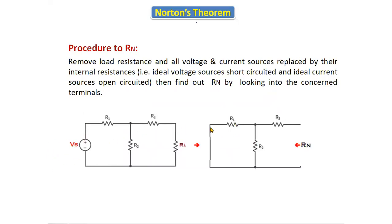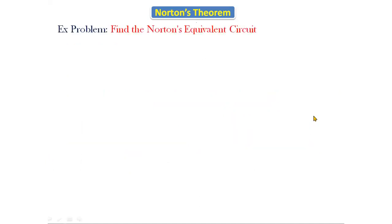To find R_N: replace the voltage source by a short circuit, and remove the load resistance by open circuiting it. After open circuiting, find the total equivalent resistance by looking into these two terminals using series and parallel operations.